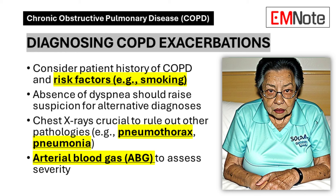Accurate diagnosis of COPD exacerbations requires a comprehensive approach. Clinicians should consider the patient's history of COPD and risk factors, particularly smoking history. The absence of increased dyspnea should raise suspicion for alternative diagnoses. Chest x-rays play a crucial role in ruling out other pathologies such as pneumothorax or pneumonia. Additionally, arterial blood gas analysis is valuable in assessing the severity of the exacerbation, particularly in terms of gas exchange abnormalities and acid-base status.